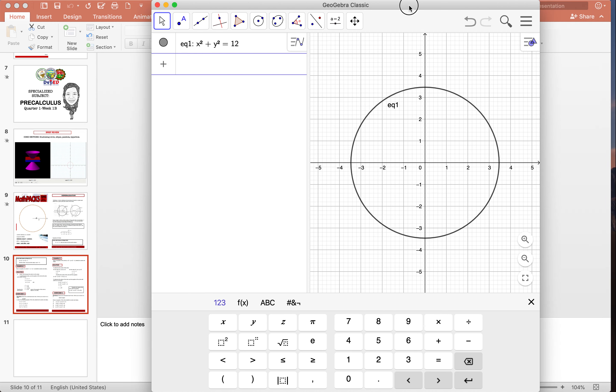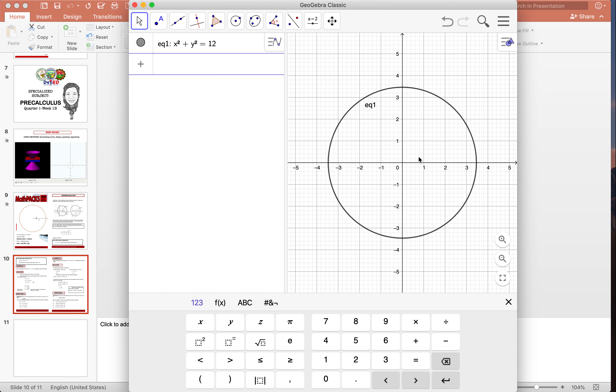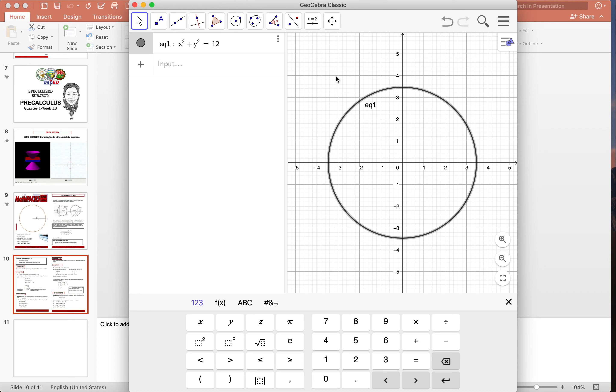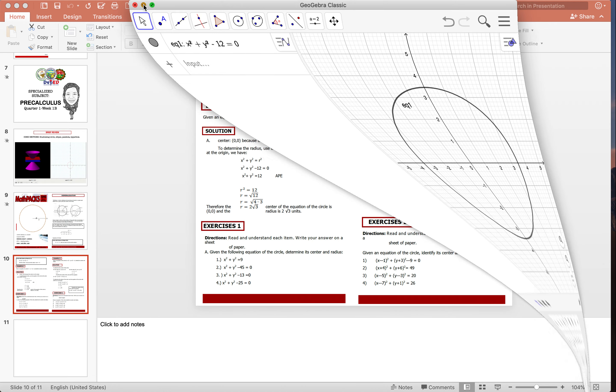So just input x squared plus y squared equals 12. There it is. Press enter. Notice, that's how it looks like. So the radius is square root of 12, the center is at 0, 0. So 3.46, there's 3, almost one-half, 3.5, it's close to 3.5, right? So that's how your circle looks like, the equation is x squared plus y squared equals 12. If you don't want to use equals 12, you can edit it, make it minus 12 equals 0. It's possible, it's the same, it's the same. Nothing changed. I hope that's clear.